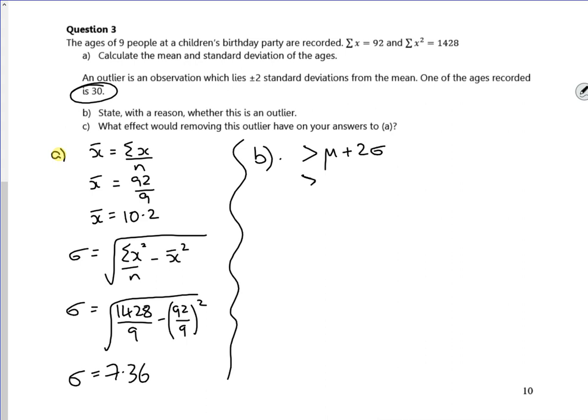I'm looking at 10.2 plus 2 lots of 7.36. So if I've got a value greater than 24.92, I've got a potential outlier.